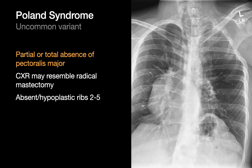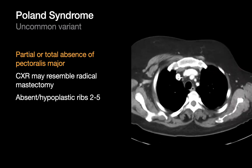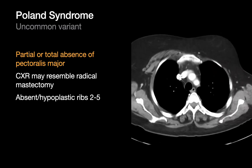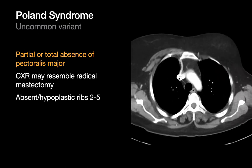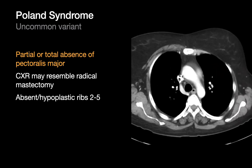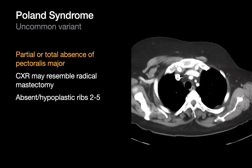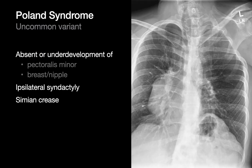Poland syndrome is the other uncommon congenital variant to know. It's named after a British surgeon, not the country, and it's an anomaly where the pectoralis muscle is either completely or partially missing. Because of the absence of the pec major muscle in the anterior chest wall, Poland syndrome can resemble mastectomy on first glance. The upper ribs in cases of Poland syndrome can also be absent or hypoplastic in some folks.